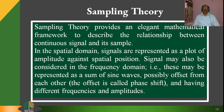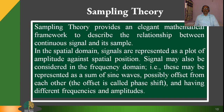Sampling theory provides an elegant mathematical framework to describe the relationship between a continuous signal and its samples. In the spatial domain, signals are represented as a plot of amplitude against spatial positions. Signals may also be considered in the frequency domain — represented as a sum of sine waves, possibly offset from each other. The offset is called phase shift, and the waves have different frequencies and amplitudes. In this theory, the Nyquist rate is the minimum rate at which a signal can be sampled without introducing errors, which is generally twice the highest frequency present in the signal.